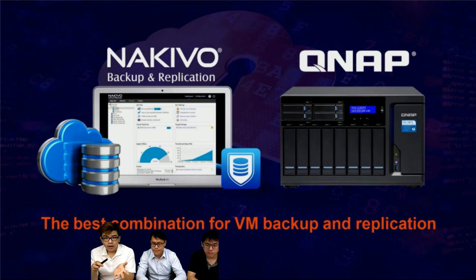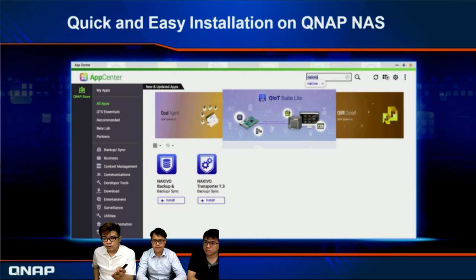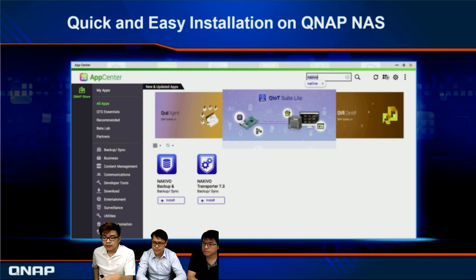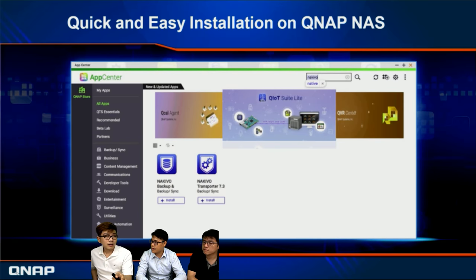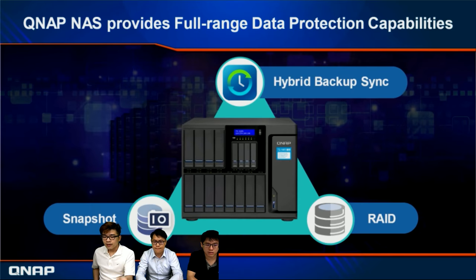Why are Nakivo and QNAP the best combination for VM backup? First, it's very easy to install — just open App Center and you'll find two apps: Nakivo Backup and Replication, which is the server component, and Nakivo Transporter. Installing the first application will also help you download the second. The Nakivo Transporter enhances backup efficiency while the overall framework is agentless.